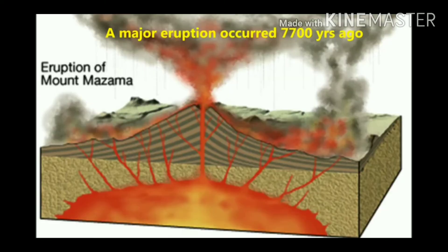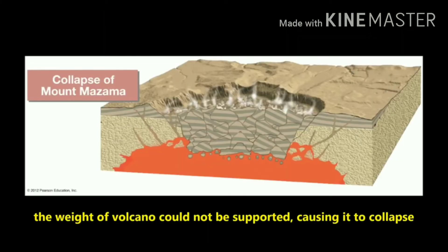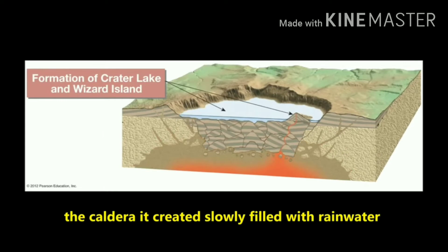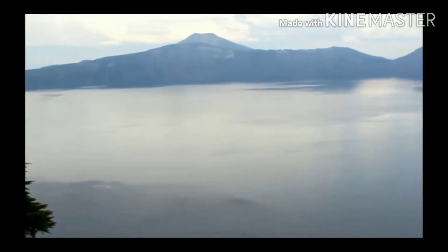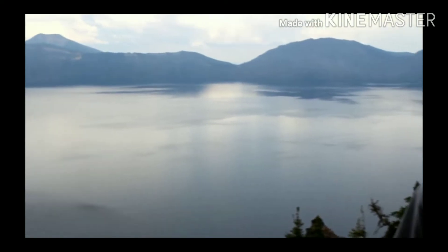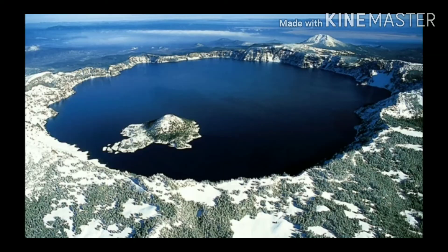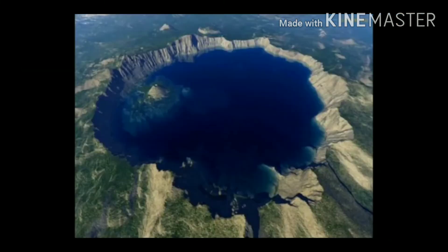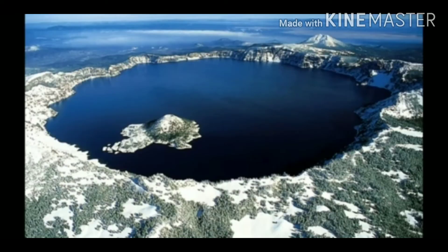Caldera Lake: due to repeated eruptions, the summit of the volcano may be blown up. In its place, a large depression is formed which is known as a caldera. They are generally formed when the magma chamber is no longer able to emit sufficient magma, resulting in the collapse of a cone either partly or wholly. This depression eventually gets filled with water and forms a lake. For example, Crater Lake in USA.